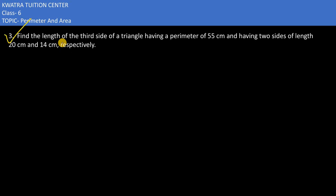Here in the next one it says find the length of the third side of a triangle having a perimeter of 55 cm.